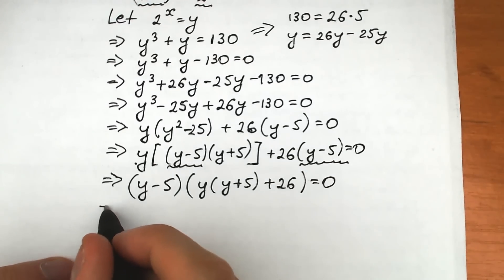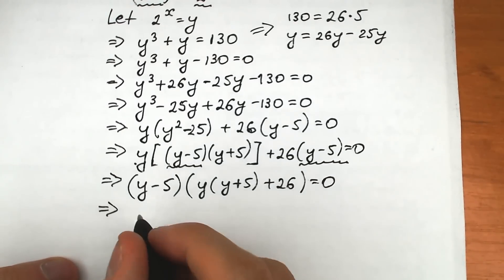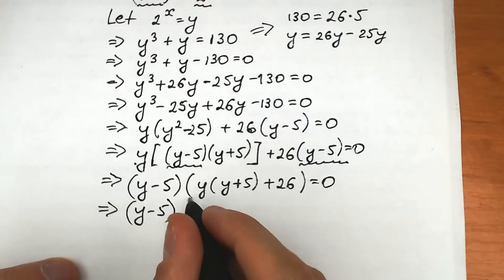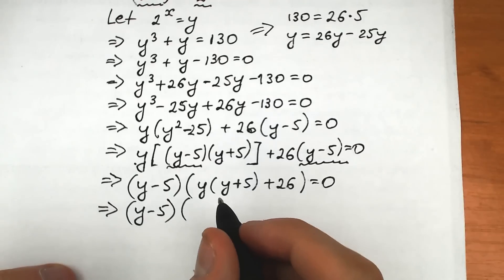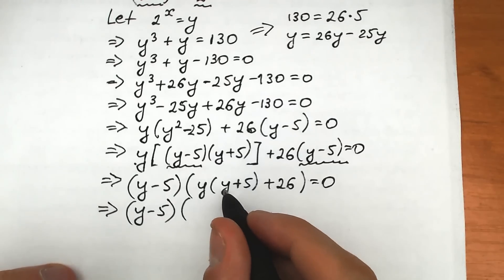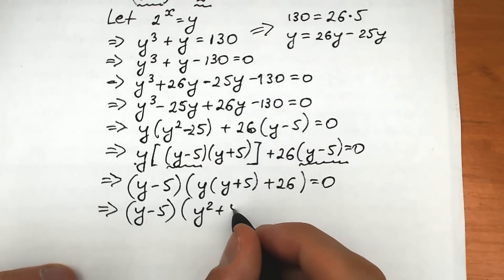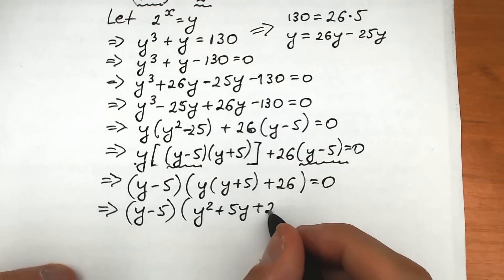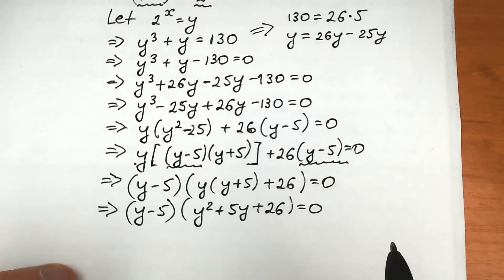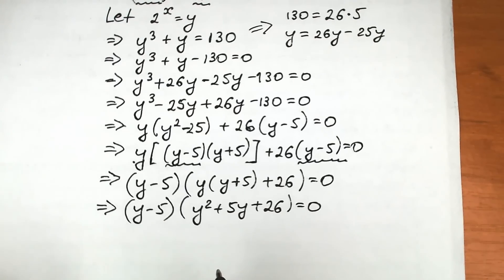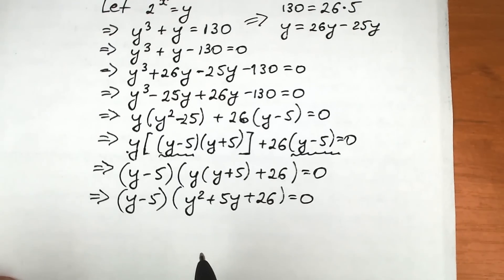Let's simplify this a little bit. So we have (y minus 5), and in the other parentheses we have y squared plus 5y plus 26, equal to zero. Finally, we have factored our expression into two parentheses. Let's solve this — because their product is equal to zero, at least one expression must equal zero.